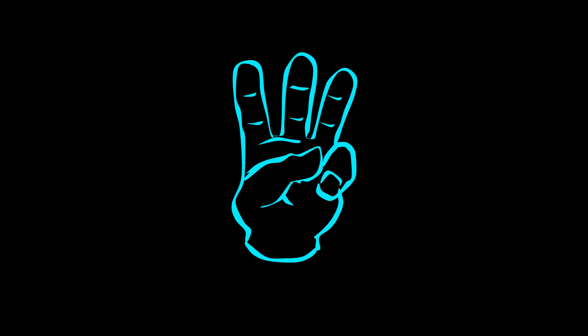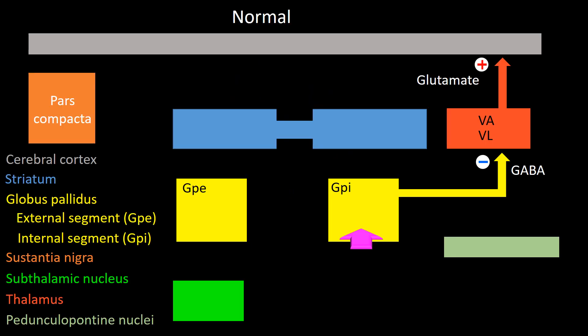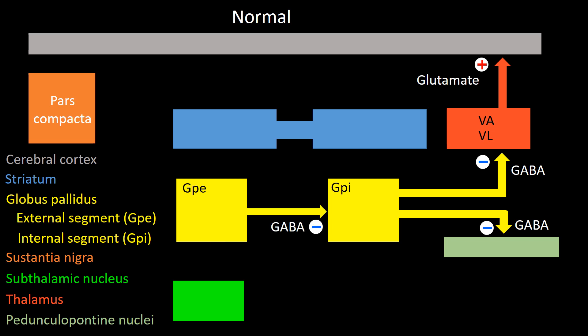The third connection also goes from the internal segment of the globus pallidus but to the pedunculopontine tegmentum nucleus; the balance function of this nucleus is important for smooth movement. The fourth connection goes from the external segment of the globus pallidus to its internal segment — this is an inhibitory connection using GABA. The fifth connection goes from the subthalamic nucleus to the internal segment of the globus pallidus — this is an excitatory connection.